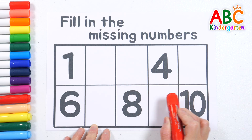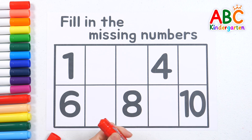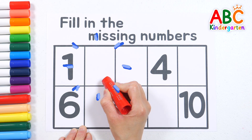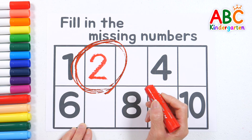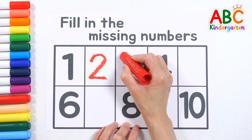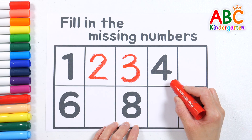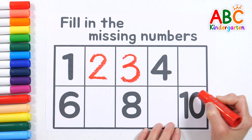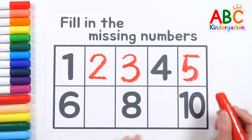Let's point to each number, read it, and fill in the missing ones. Are you ready? 1. What number goes here? That's right, it's number 2. And the next number is 3. 4. What comes after 4? Number 5 is correct.